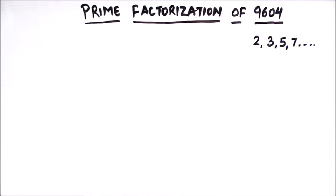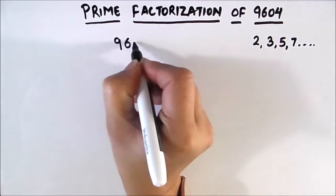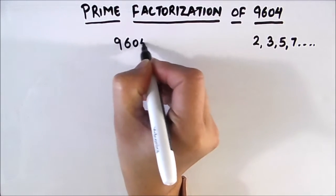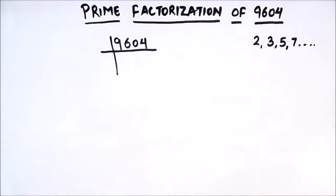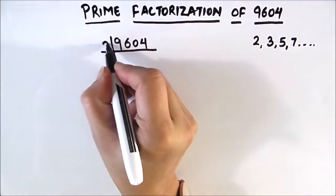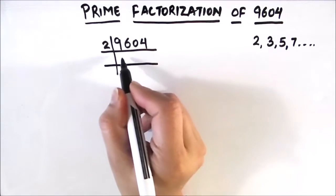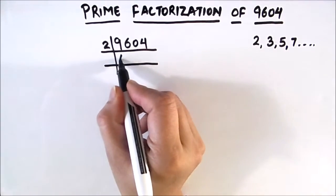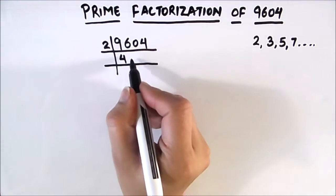To find the prime factorization of 9604, we write 9604 and divide it by prime numbers. As it is an even number, it is fully divisible by 2. So we'll use 2 as the first prime factor to divide 9604. 2 times 4 is 8, 1 is remainder, this becomes 16, 2 times 8 is 16, 2 times 0 is 0, and 2 times 2 is 4.